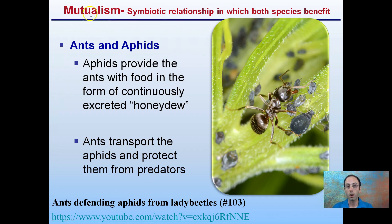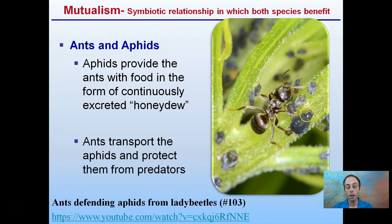Let's look more specifically at mutualism — a symbiotic relationship in which both species benefit. Here's an example: we have ants and aphids. Aphids provide the ants with food in the form of continuously excreted honeydew, from piercing leaf parts and sugars coming out. Ants transport the aphids and protect them from predators like lady beetles, in exchange for the honeydew. So this is a mutual benefit — the aphid benefits from being moved around and protected, and the ant gets the honeydew.